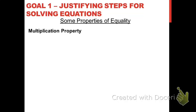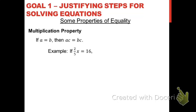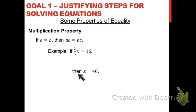Then there's the multiplication property of equality, where you multiply both sides of the equation by the same value. For example, if you multiply both sides by 5 halves, that cancels out the 2 fifths and gets x by itself. 16 times 5 halves is 16 times 5, that's 80, divided by 2 is 40. That's the multiplication property of equality.